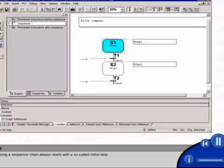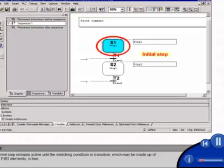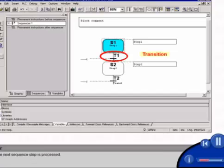Processing a sequence chain always starts with a so-called initial step. The current step remains active until the switching condition or transition, which may be made up of ladder or FBD elements, is true. Then the next sequence step is processed.